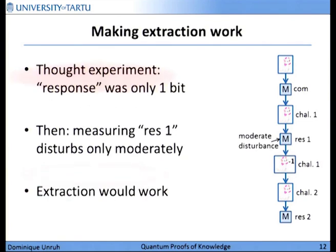Let's make a thought experiment. Assume the responses are not long bit strings as usual in zero knowledge, but just one-bit messages — this is just a thought experiment, there are no sensible protocols with one-bit responses. Then, by measuring the response, we measure only a single bit, and the less you measure, the less you disturb. If you do the math, you find that measuring response one disturbs the state only in some moderate amount, and this amount is moderate enough that the whole extractor works with a sufficiently good probability. Therefore, extraction would work if we had a protocol with a one-bit response.